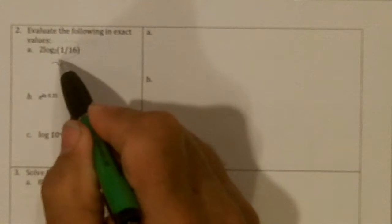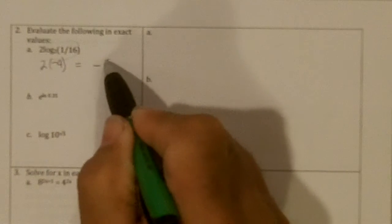16 is 2 to the 4th, so 1/16th is 2 to the negative 4. So this is negative 4 times 2, which is negative 8.